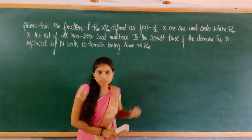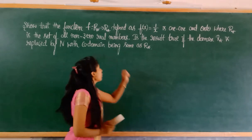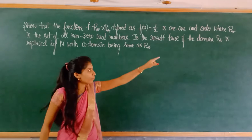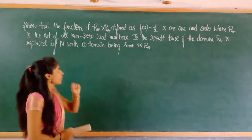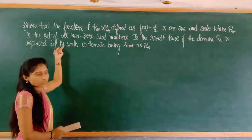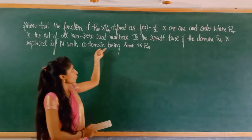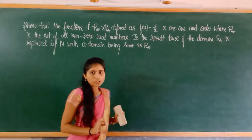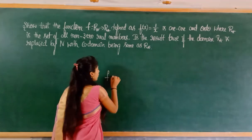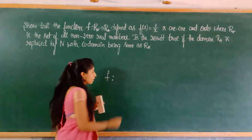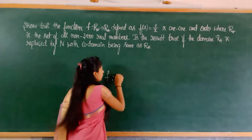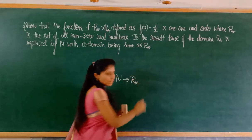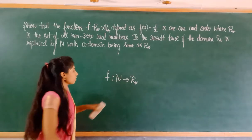If the condition satisfies for one-to-one and onto, then in place of domain R* we replace it with natural numbers, keeping the co-domain as R*. So the function becomes f from natural number to R*. Just the domain is changing.